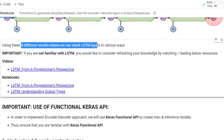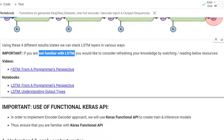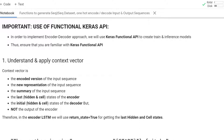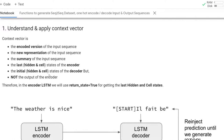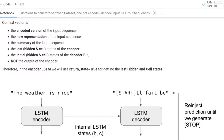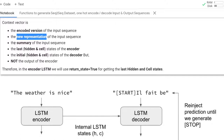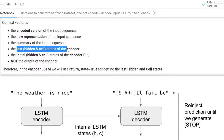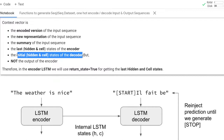By using these four different combinations of return_sequences and return_state boolean parameter values, we can stack LSTM layers in various ways. If you are not familiar with LSTM, please check those resources from the videos or notebooks so you can continue to follow the tutorial. Now let me apply the context vector concept. The context vector is the encoded version of the input sequence — the new representation, or summary of the input sequence — specifically the last hidden and cell states of the encoder, which will serve as the initial hidden and cell states of the decoder, but not the output of the encoder.